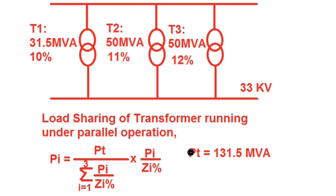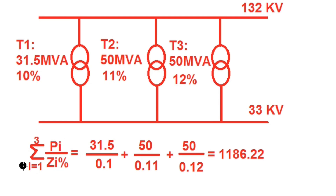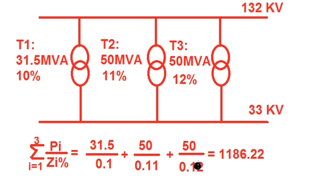We first calculate the summation of Pi divided by percentage impedance for i = 1, 2, 3. For transformer 1: 31.5 divided by 0.1; for transformer 2: 50 divided by 0.11; and for transformer 3: 50 divided by 0.12. The total summation comes to 1186.22.